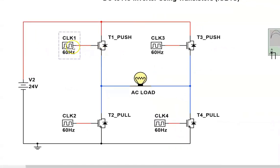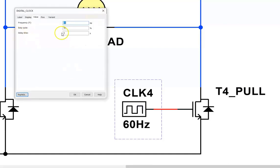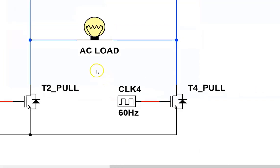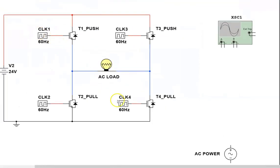So let's have a look at these clocks. Clock one works with T1 which pushes current through the load. Clock four works with T4 which pulls current through the load. Clock four is set to zero seconds as clock one is. So clock one and clock four pulse positive at the same time. So current will flow from the bus through transistor T1 through the load, through transistor T4 and back to the supply.